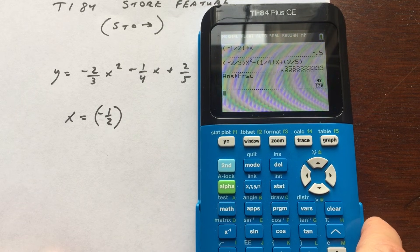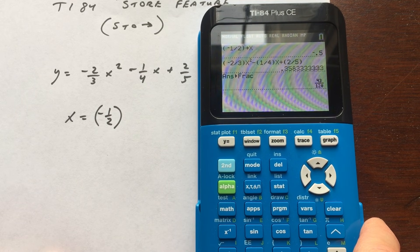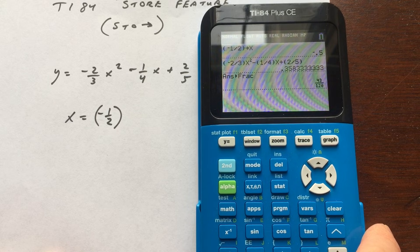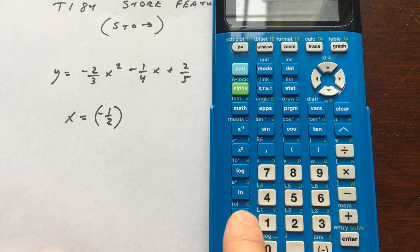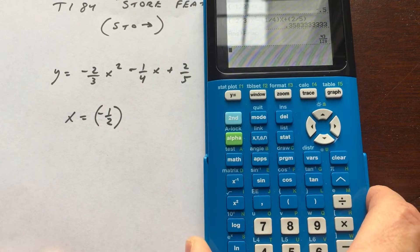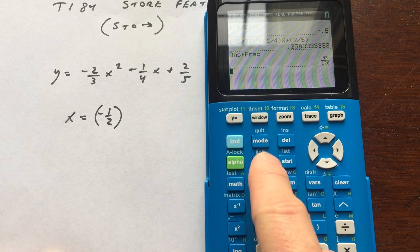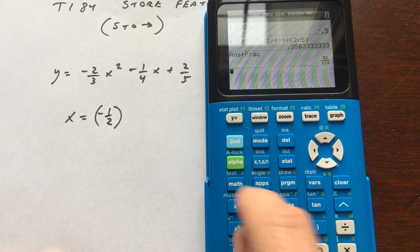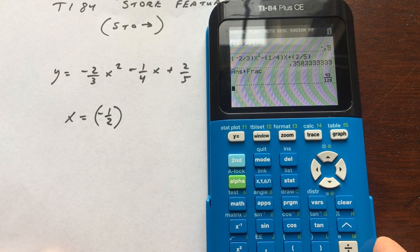So again, this is just a quick, handy feature that the TI-84 and TI-83 and some other graphing calculators have. It's that store key right there. Just remember to put the value in first, then hit the store key, and then put what variable you want that stored underneath and hit enter.